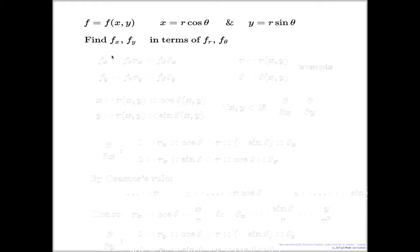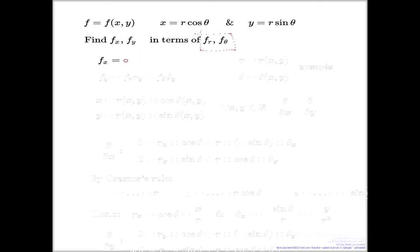Look at the same question. I'm going to use the chain rule again, but in the opposite direction straight away. Before, the f_r derivative was expressed as f_x·x_r + f_y·y_r. Well, why can't we do it directly for f_x now? If I want f_x and f_y in terms of f_r and f_theta, by the chain rule I say that f_x equals f_r·r_x plus f_theta·theta_x. And the same line for f_y.